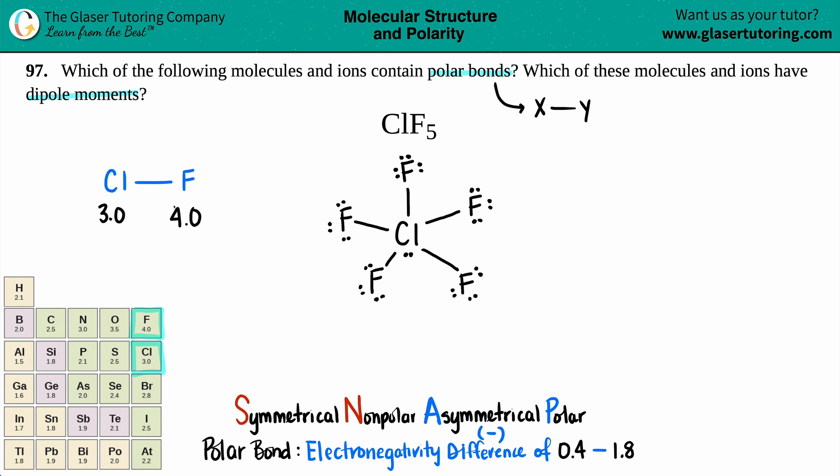So when you subtract the two, just know that your electronegativity difference is always going to be a positive value. So when you subtract these, 4 minus 3, right, is going to be a 1.0.